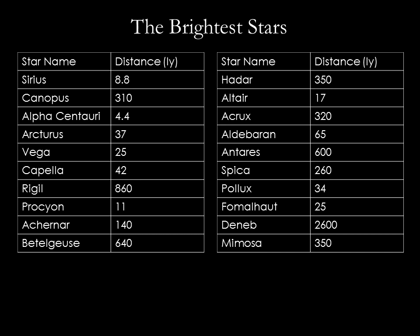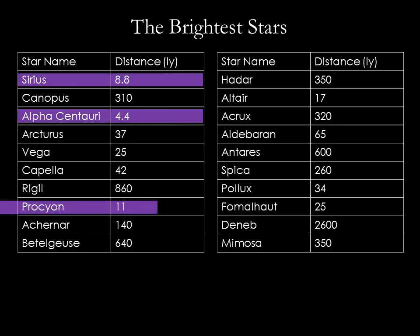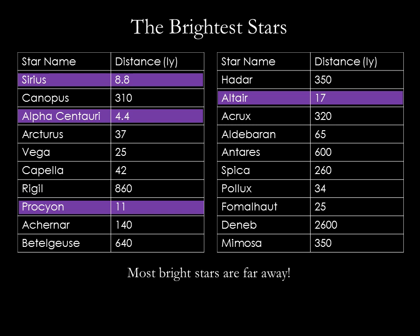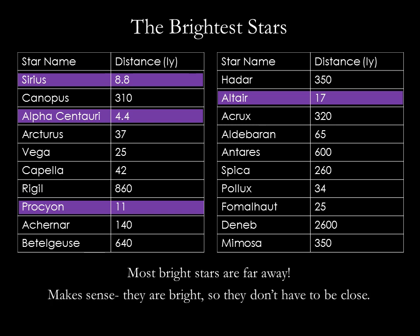Now let's turn our attention to the brightest stars in the sky. This table shows the 20 brightest stars in our sky and their distances. We see that not many of these stars are in our own neighborhood — in fact, only four of these stars are within 20 light-years of the Sun. This table shows that most of the bright stars are far away, and this makes sense when you realize that bright stars don't have to be close to be visible to us. The star Deneb, for example, makes the top 20 brightest stars list and it's over 1,000 light-years away.